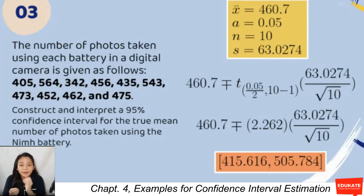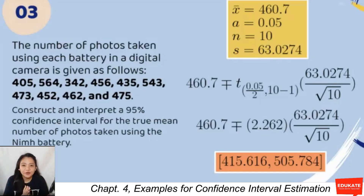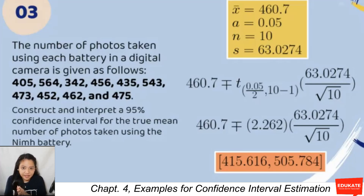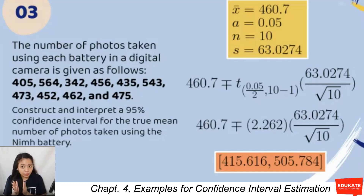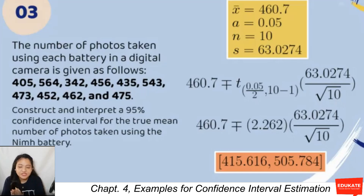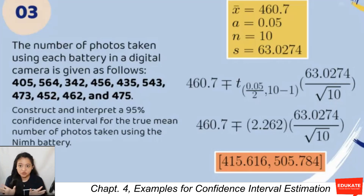The s computed from the calculator is 63.0274. The expression becomes: 460.7 ± t sub (0.05/2, n−1) × (63.0274 / √10). Looking up t sub (0.025, 9) — with degree of freedom 9 — in the t-table gives a value of 2.262.